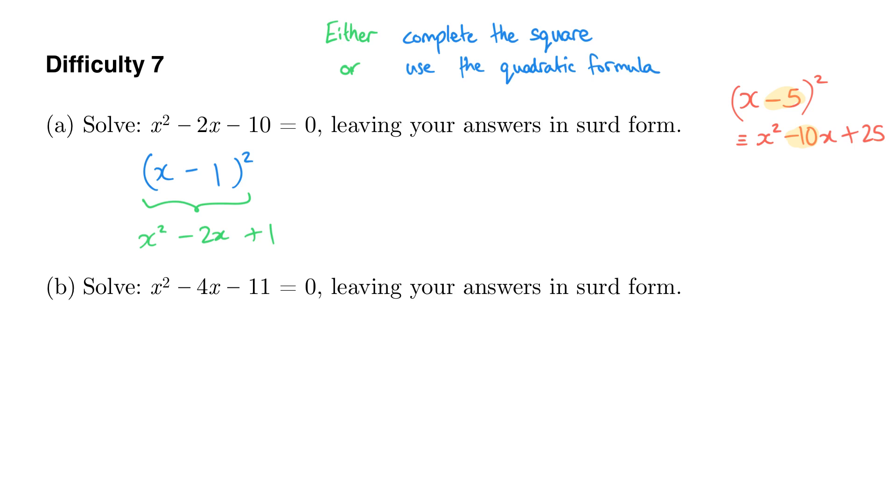Now what we actually want is x squared minus 2x minus 10. I've actually got a plus 1. So what do I need to do to this to actually turn that into x squared minus 2x minus 10? Well I need to subtract 11, don't I? I need to subtract another 11 off here to get an overall expression that's exactly this. So this green bit is exactly what I've got here, and what I need to do to adjust this is subtract 11.